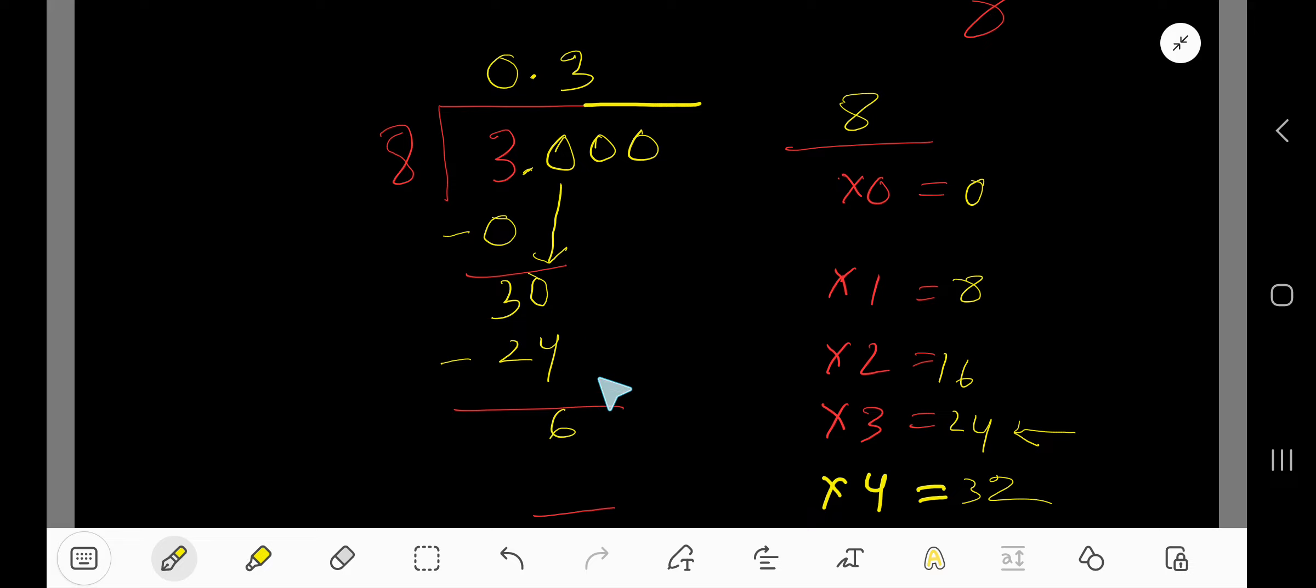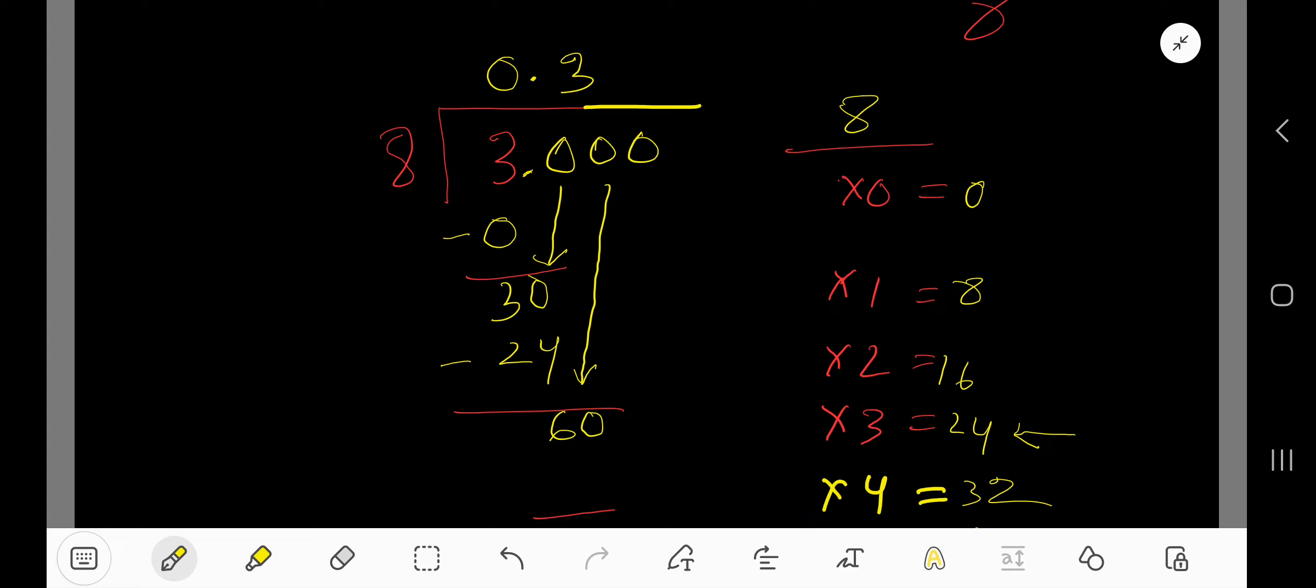Bring down this 0. Then you're getting 60. 8 goes into 60 how many times? Look at the multiplication table.